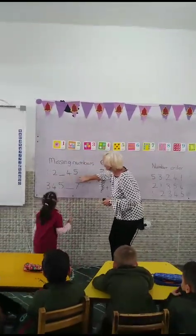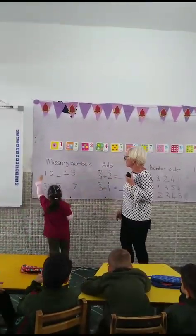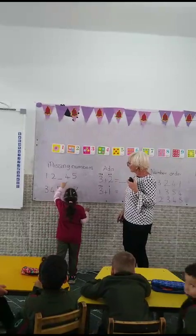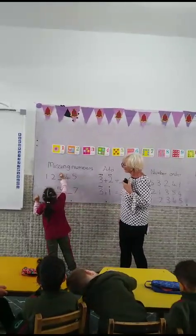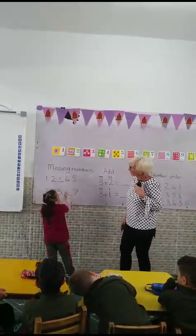Can you write for me the missing number in this row? What's the missing number? 1, 2, 4, 5, 6, 7, 8, 9, 10. Well done.